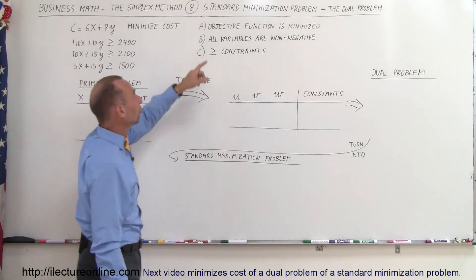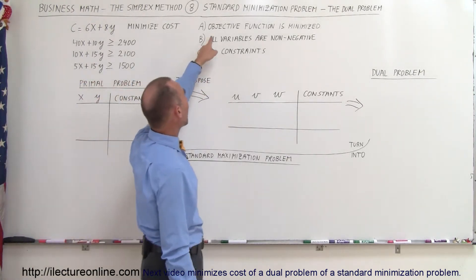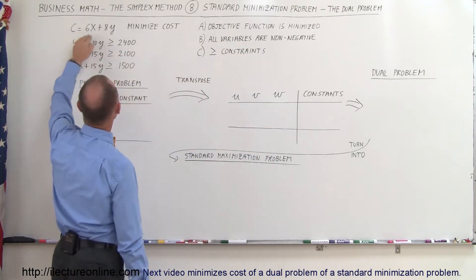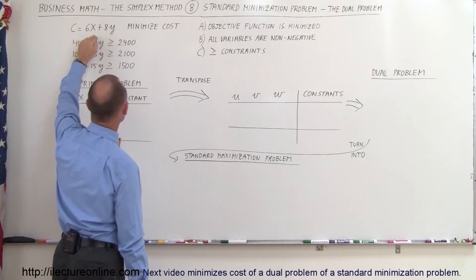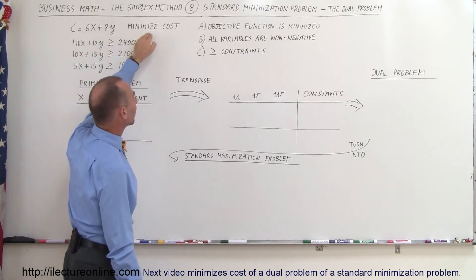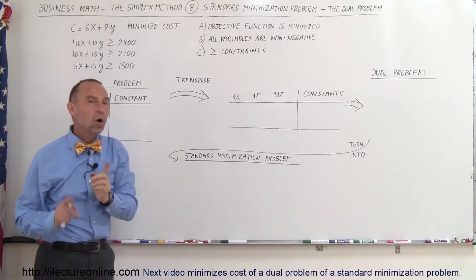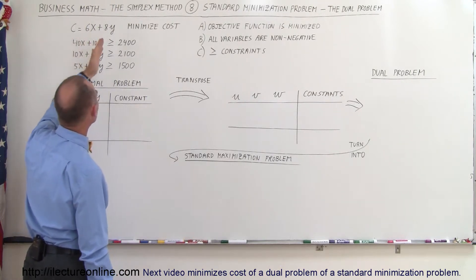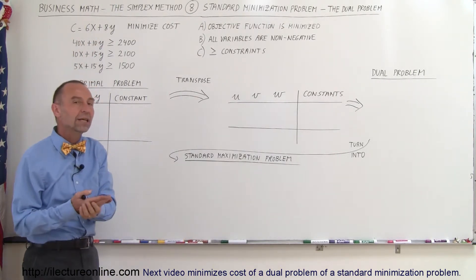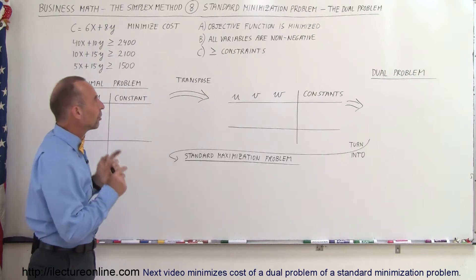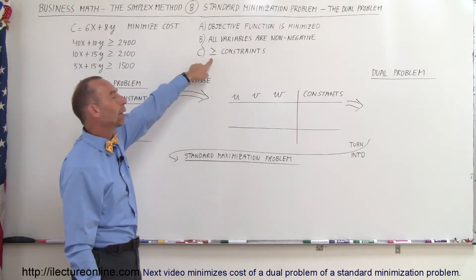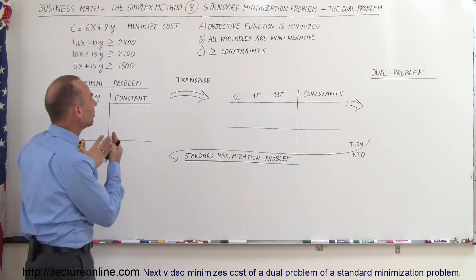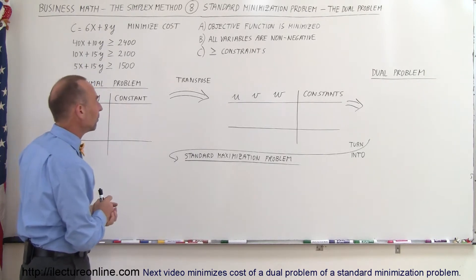The rules are as follows. First, we have to have an objective function that is being minimized, and here we are indeed taking the cost equation — the objective function — and we're supposed to minimize that cost. Secondly, all the variables are non-negative; there's a positive quantity of each variable. And thirdly, we use nothing but greater than or equal to constraints. So those are the indicators that this is indeed a standard minimization problem.